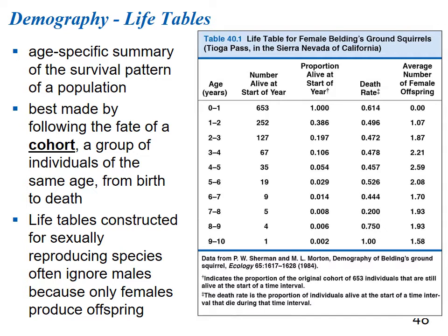Looking at a life table for female Belding's ground squirrels: starting with 653 individuals in the 0-to-1-year age group with a death rate of 0.614. By the 6-to-7-year range, only 9 are alive; 5 in the 7-to-8 range; 4 in the 8-to-9 range; and 1 in the 9-to-10 range. A 10-year-old ground squirrel is pretty old.